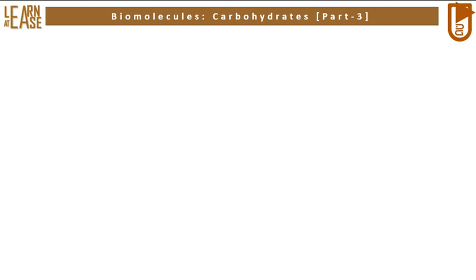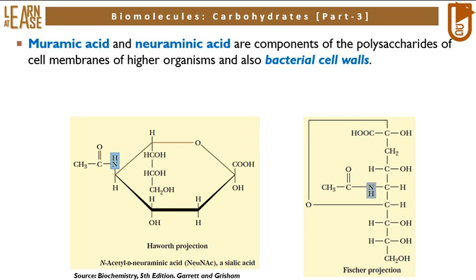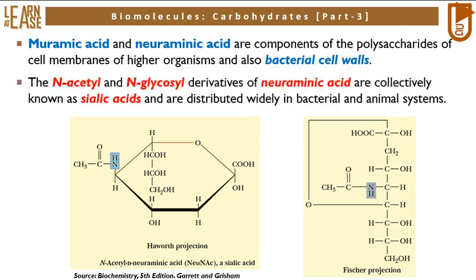The following image shows the structure of N-acetyl-D-neuraminic acid, also known as sialic acid. The structure on the left is represented using Haworth projection, while on the right it uses Fisher projection formula. Muramic acid and neuraminic acid are components of the polysaccharides of cell membranes of higher organisms and bacterial cell walls. The N-acetyl and N-glycosyl derivatives of neuraminic acid are collectively known as sialic acids and are distributed widely in bacterial and animal systems. In the structures, the amino group is represented using a red tick mark.